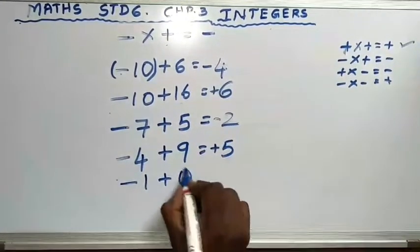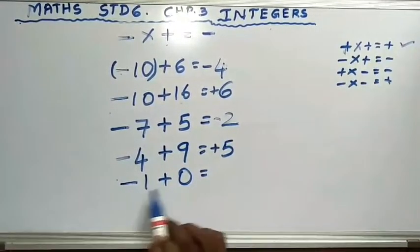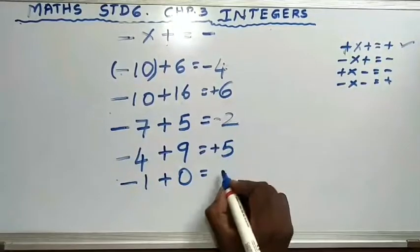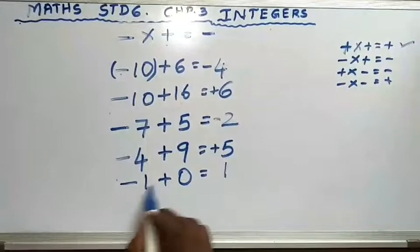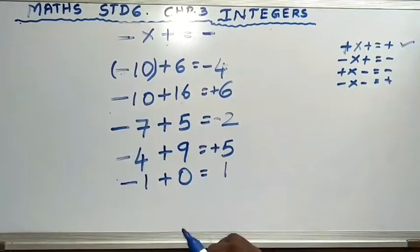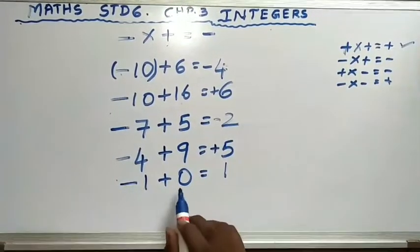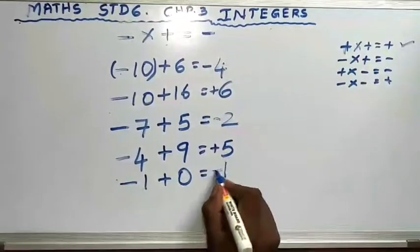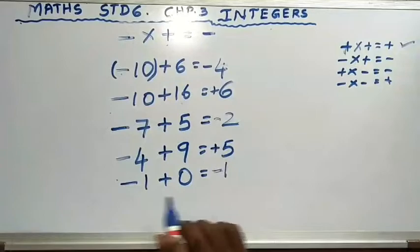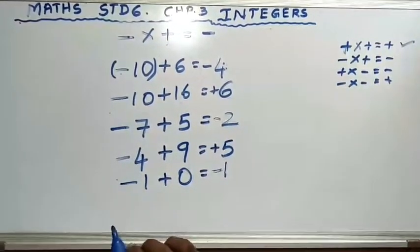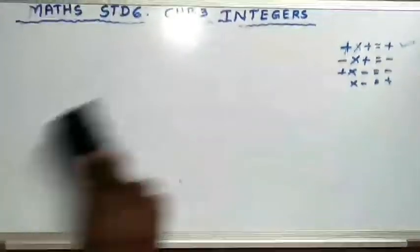One more example: minus 1 plus 0. One side minus, one side plus — so subtract. 1 minus 0 is 1. But which number is greater? Now 0 has no sign. Always remember: 0 doesn't have any sign. So minus 1 plus 0 is only minus 1. Don't get confused.